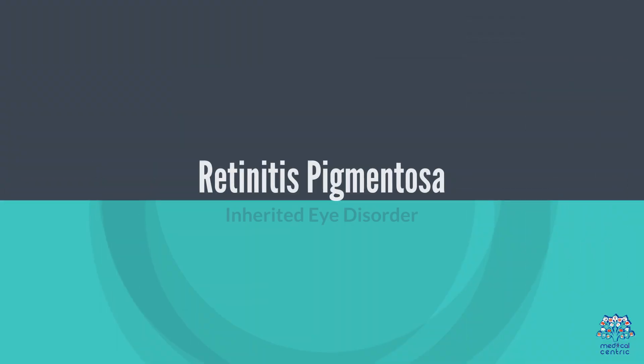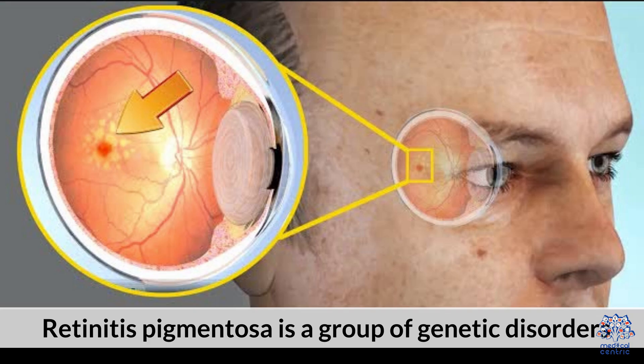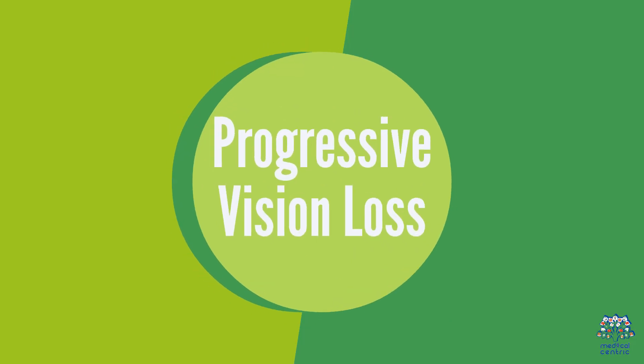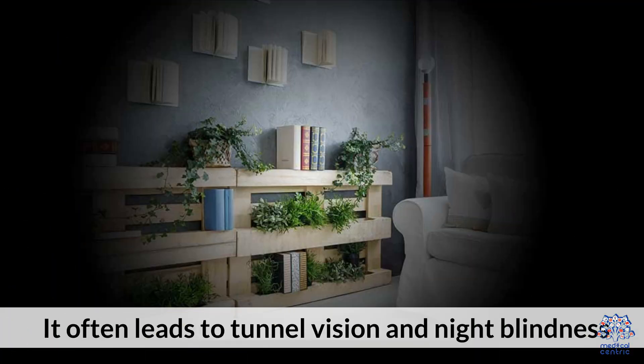7. Retinitis Pigmentosa — Inherited Eye Disorder. Retinitis pigmentosa is a group of genetic disorders that cause a breakdown and loss of cells in the retina. It often leads to tunnel vision and night blindness.